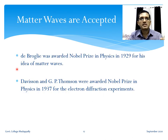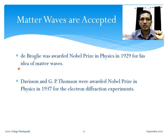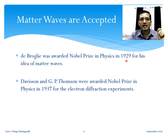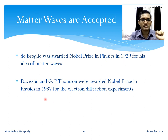With this experimental evidence in 1927, within four years of de Broglie's idea, the concept of matter waves was widely accepted. Two years later, de Broglie was awarded the Nobel Prize in Physics in 1929. Eight years after that, Davisson from the American team and G.P. Thomson were awarded the Nobel Prize in Physics in 1937 for the electron diffraction experiments.